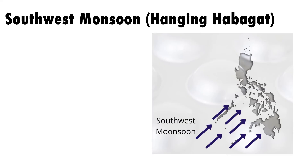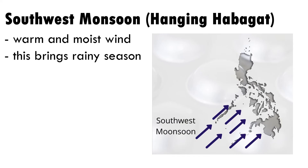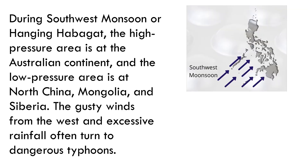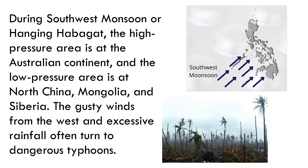The southwest monsoon or hanging habagat brings warm and moist wind, which brings the rainy season. During the southwest monsoon, the high pressure area is at the Australian continent, and the low pressure area is at north China, Mongolia, and Siberia. The gusty winds from the west and excessive rainfall often turn into dangerous typhoons.